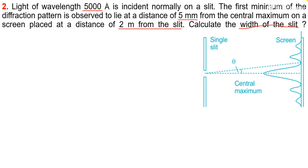So here 5 mm is the distance of the first minimum from the center, so this distance is 5 mm. And 2 meters is the distance of the screen from the slit.